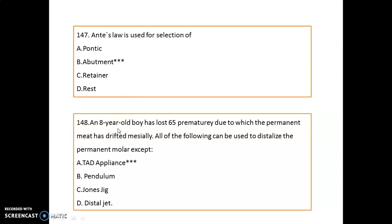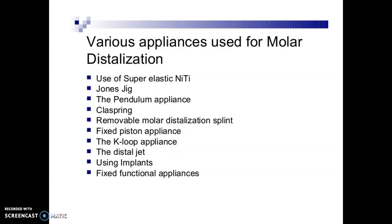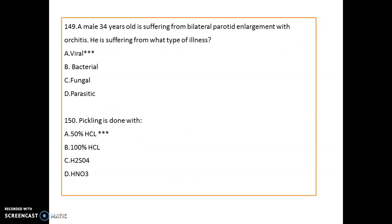An eight-year-old boy has lost tooth 65 prematurely, causing the permanent teeth to drift mesially. All of the following can be used to distalize a permanent molar except the TAD appliance. TAD stands for Temporary Anchorage Device. Appliances used for molar distalization include: super-elastic Jones jig, pendulum appliance (most commonly used), glass spring, removable molar distalization splint, fixed piston appliance, K-loop appliance, distal jet, implants, and fixed functional appliances.